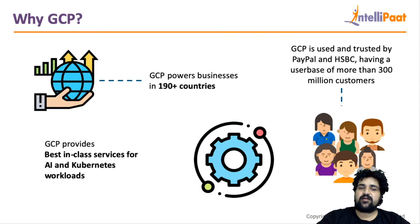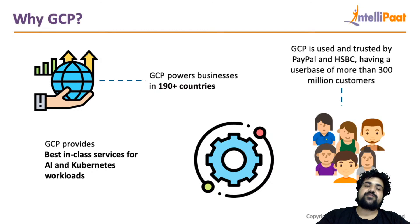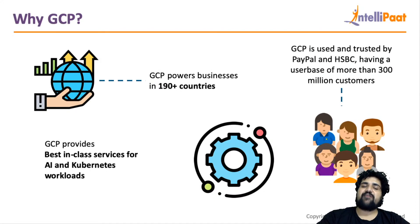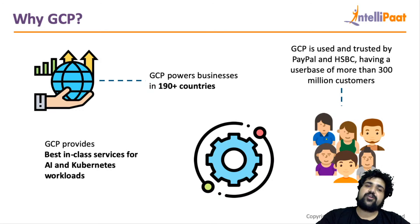The tools that Google used internally they have now made available on their cloud platform. That is why you can trust the AI, Kubernetes, and big data services Google offers — they are going to be the best, and customer feedback also confirms this. When people have used AWS or Azure services for AI, machine learning, or Kubernetes, they did not find the same level of efficiency they get with GCP.